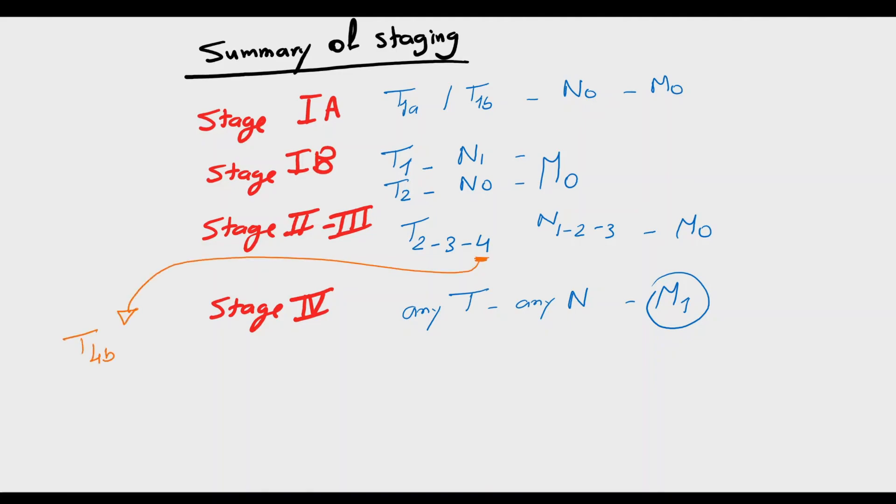Stage 2 and 3, any T greater than T1 with N positive classification and no distal metastasis. Stage 4 is any T, any N but with distal metastasis.